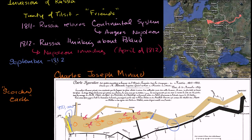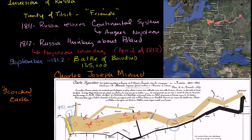We have the Battle of Borodino in September 1812. At this point, Napoleon only had 135,000 of his original 450,000 men. The rest had to be left behind to guard the supply route, or they deserted because they were getting hungry, or they were lost in minor skirmishes along the way. At the Battle of Borodino, after a long, protracted, super bloody battle: 44,000 Russian casualties and 35,000 French casualties.